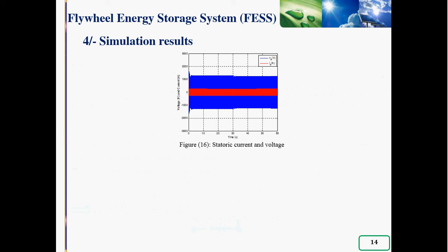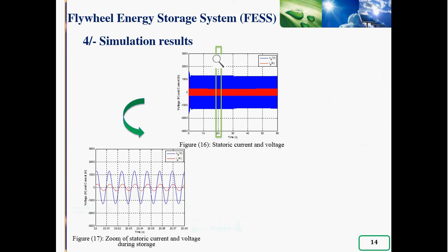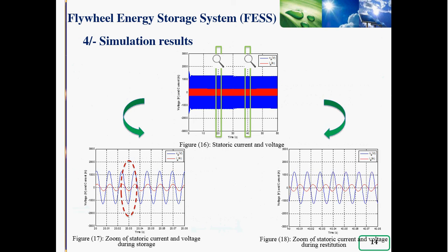Figure 16 represents stator current and voltage. If we zoom during the storage, the current is in phase with the voltage where the machine acts as a motor. In turn, the current ahead of phase with the voltage where the machine works as generator allows to justify the two modes of operation of the asynchronous machine.